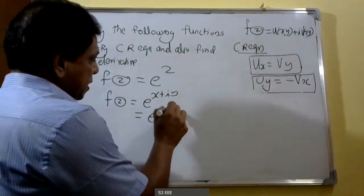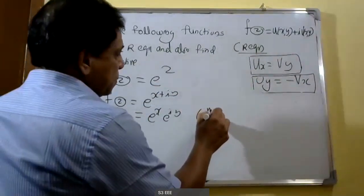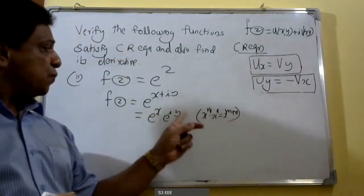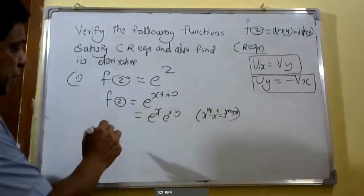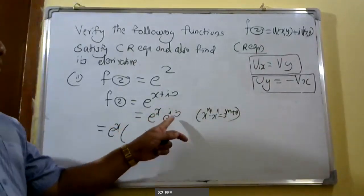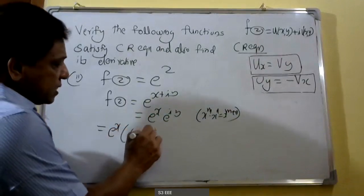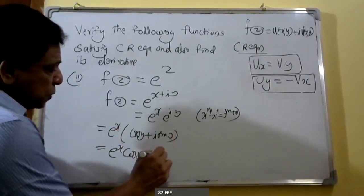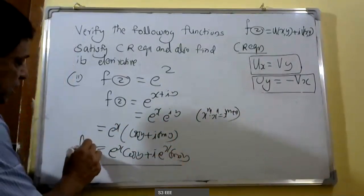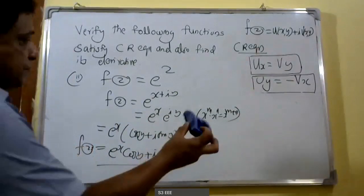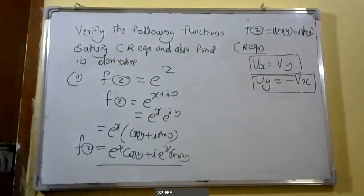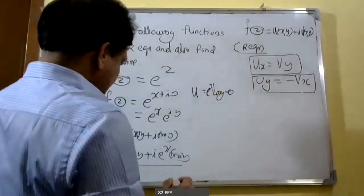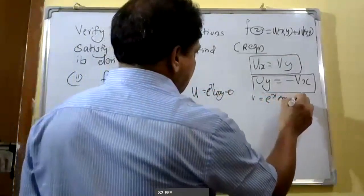Therefore e raised to x plus i y can be taken as e raised to x into e raised to i y, using the rule x raised to m into x raised to n equals x raised to m plus n. Then e raised to i y can be taken as cos y plus i sine y. Removing the bracket: e raised to x cos y plus i into e raised to x sine y. By equating real and imaginary parts: u equals e raised to x cos y — equation 1, and v equals e raised to x sine y — equation 2.